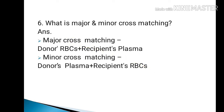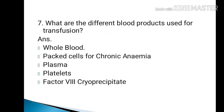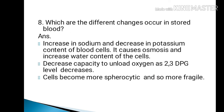Major cross matching is when the donor's red blood cells are matched with the recipient's plasma. Minor cross matching is when the donor's plasma is matched with the recipient's red blood cells. Different blood products used for transfusion include whole blood, packed cells for chronic anemia, plasma, platelets, and factor VIII cryoprecipitate.